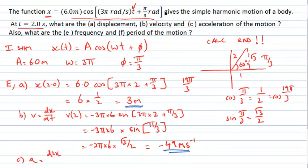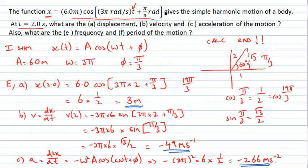To get my acceleration, I can take the second derivative of my displacement, or I can differentiate my velocity. We'll find that's given by -ω²A cos(ωt + φ). If I use the generic expression, substituting for my ω and my A, I end up with -(3π)² times 6 times the cosine of 19π/3, which is 1/2 again. And so we have -266 meters per second squared as my numerical value for my acceleration.